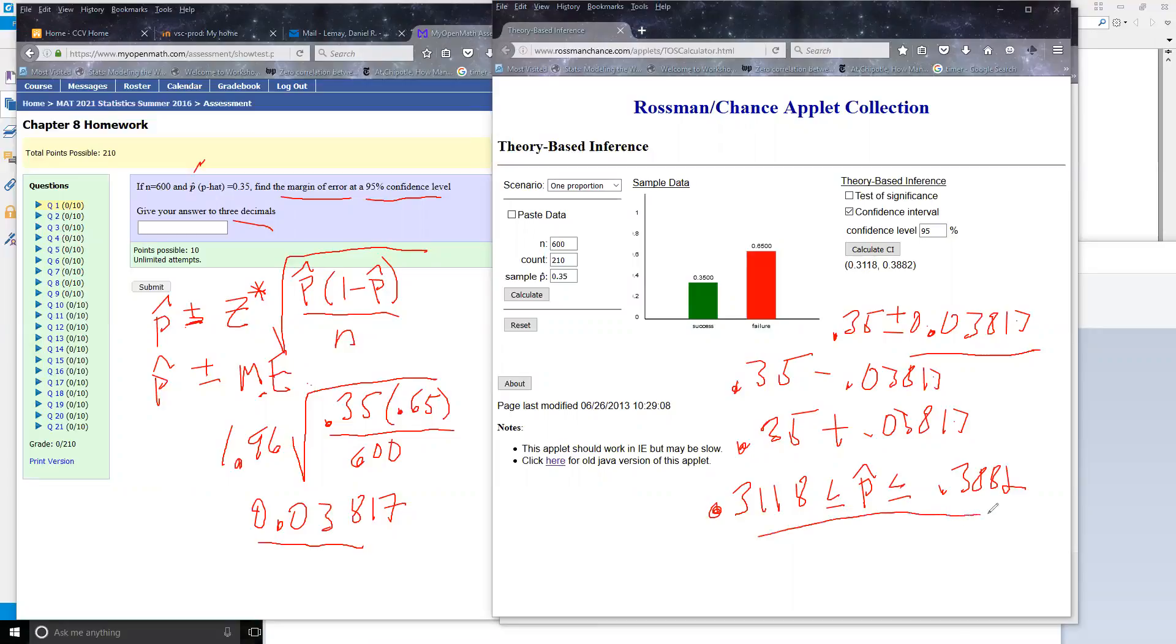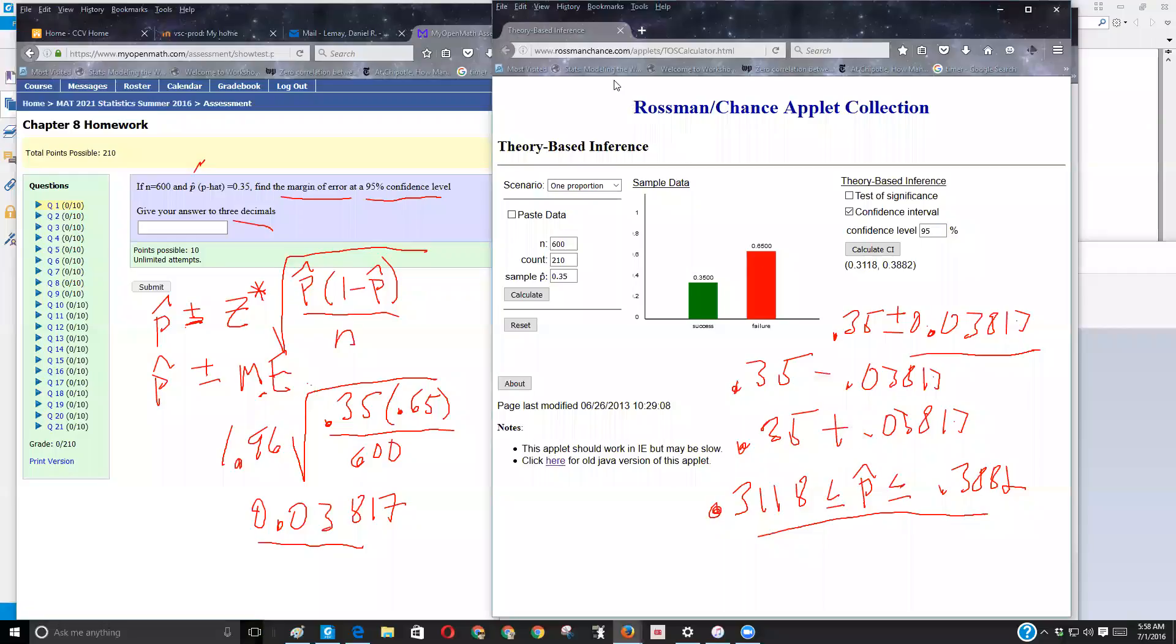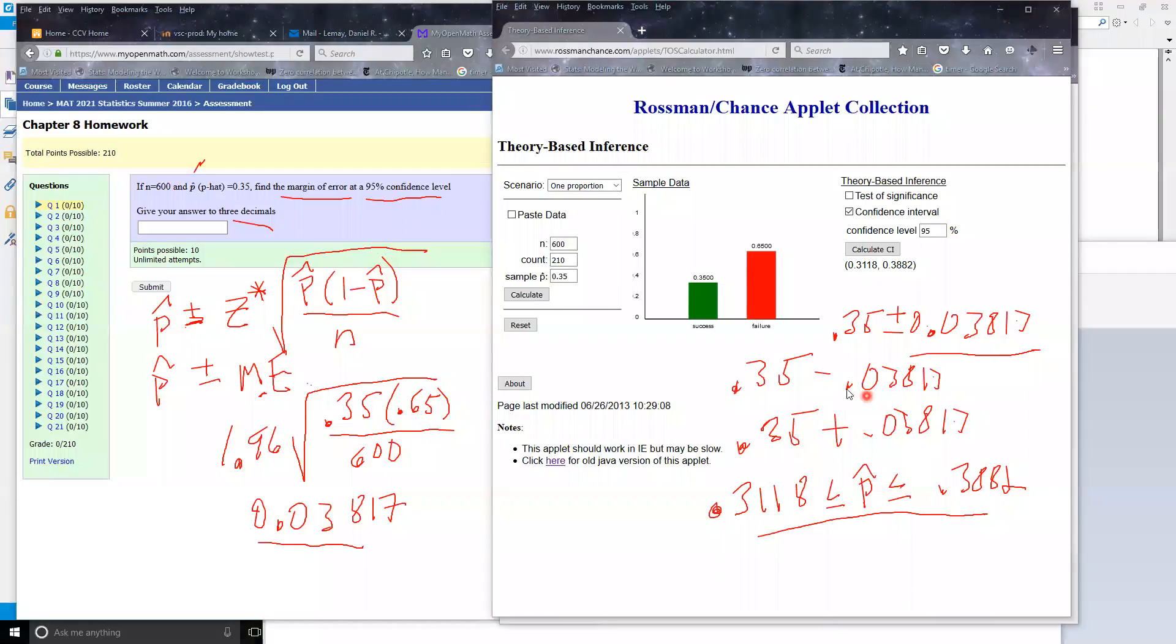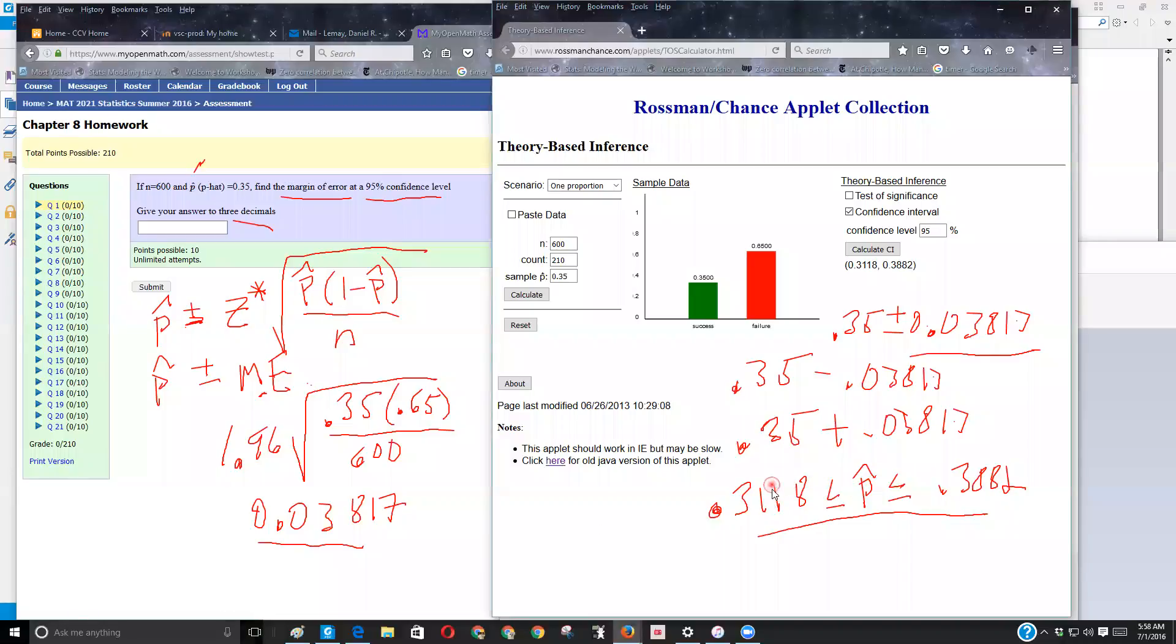This interval is two of these margin of errors wide. Remember, because I've subtracted it and I've added it. To get that, let me get that spotlight tool going. So this is the p-hat minus the margin of error, and this is p-hat plus the margin of error.